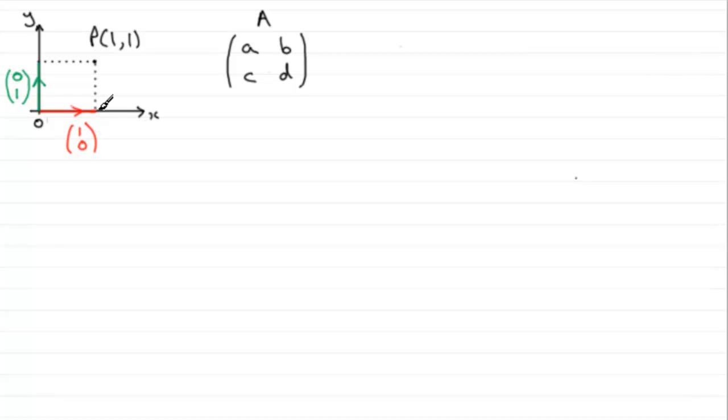And if we just take the endpoints of 1,0, call that i, and the endpoints of 0,1, call that j, then we've got our unit square O, i, p, j.